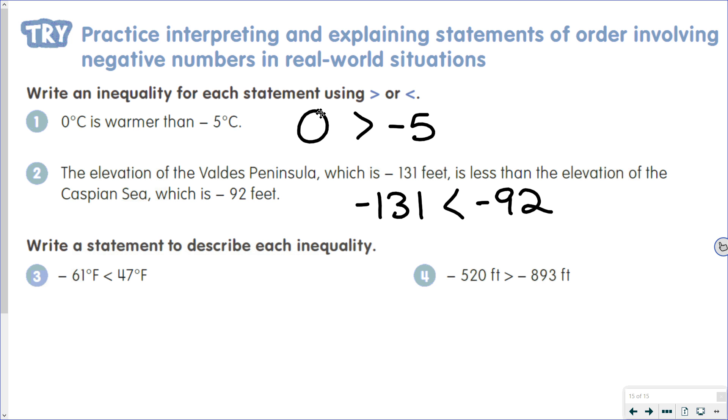For number 4, our comparison is negative 520 feet is greater than negative 893 feet. You could say the elevation of the Pacific Ocean Trench was negative 520 feet, which is a higher elevation than the Atlantic Ocean Trench at negative 893 feet.